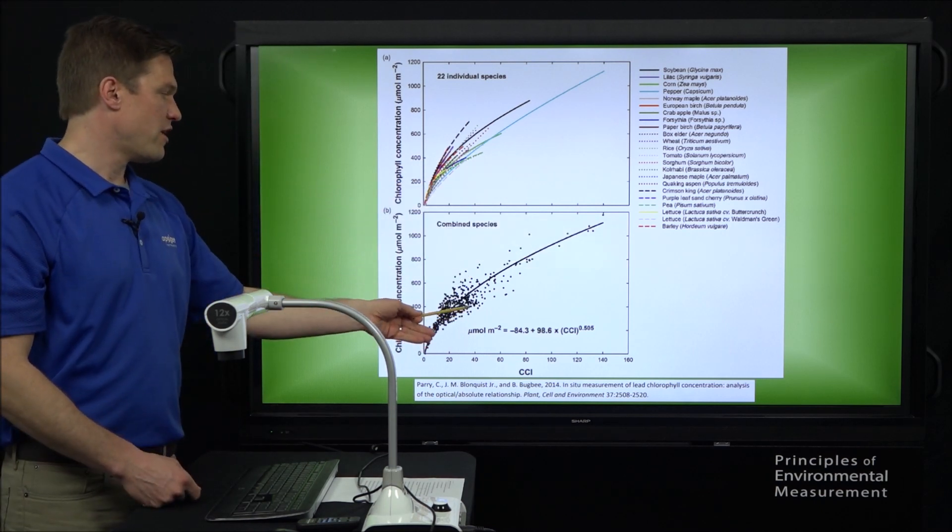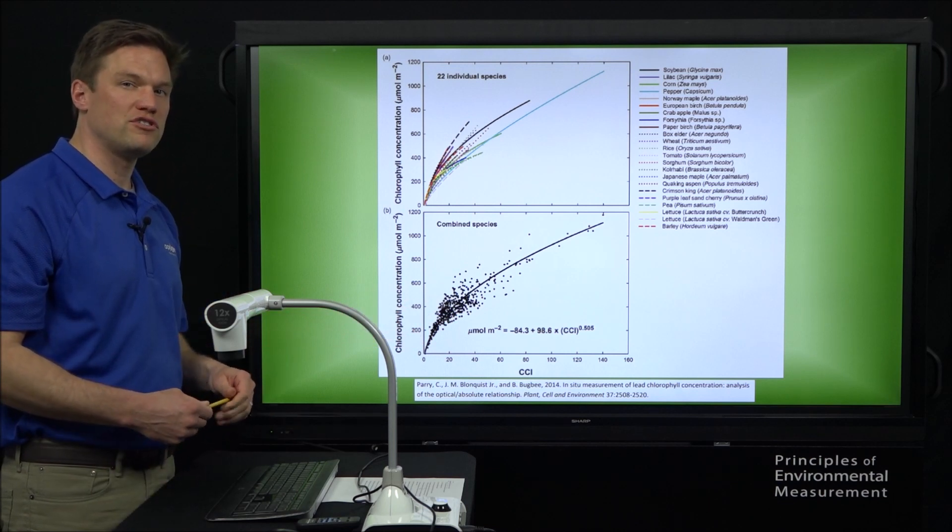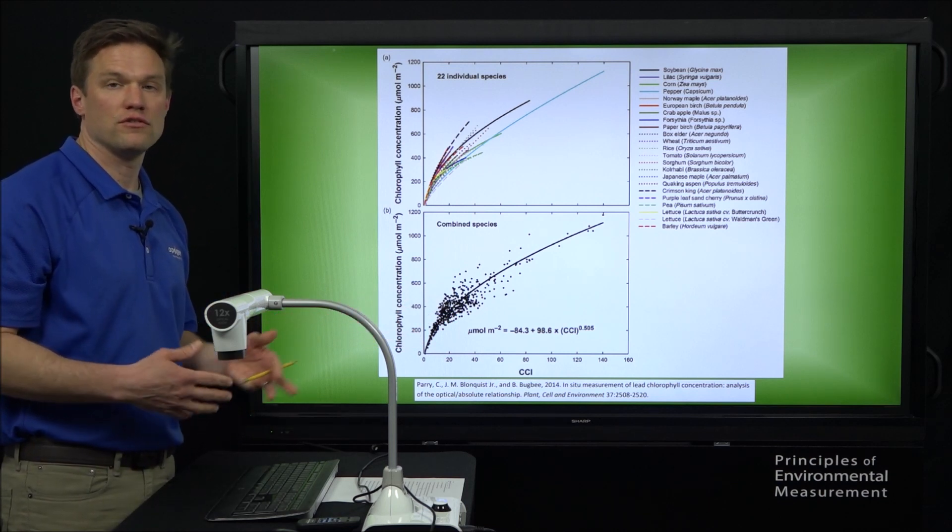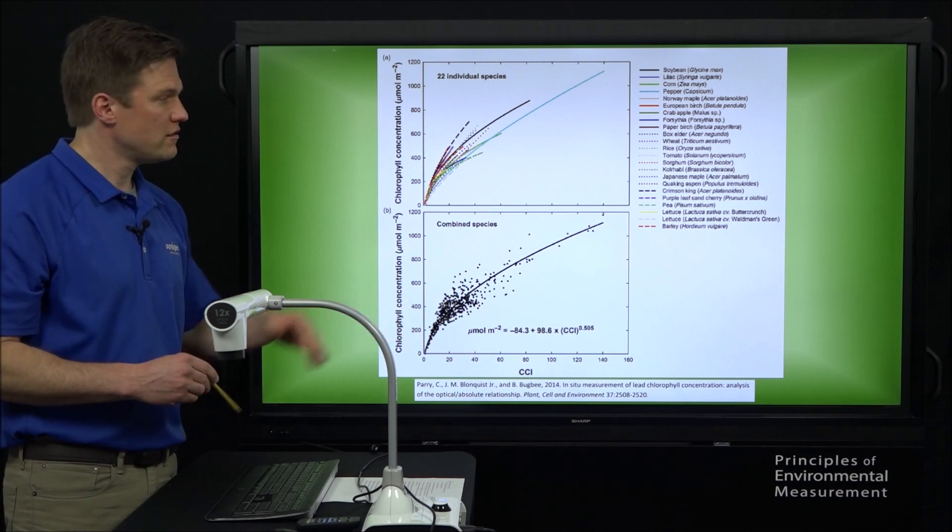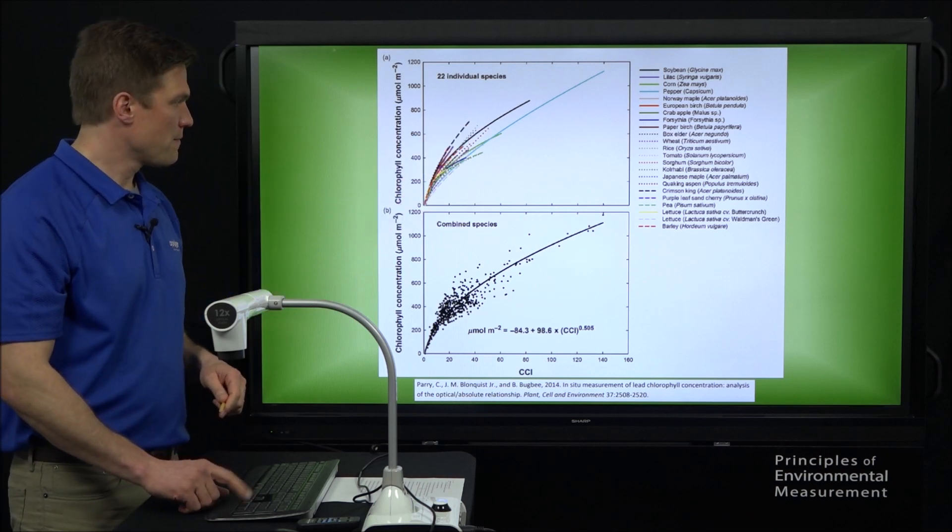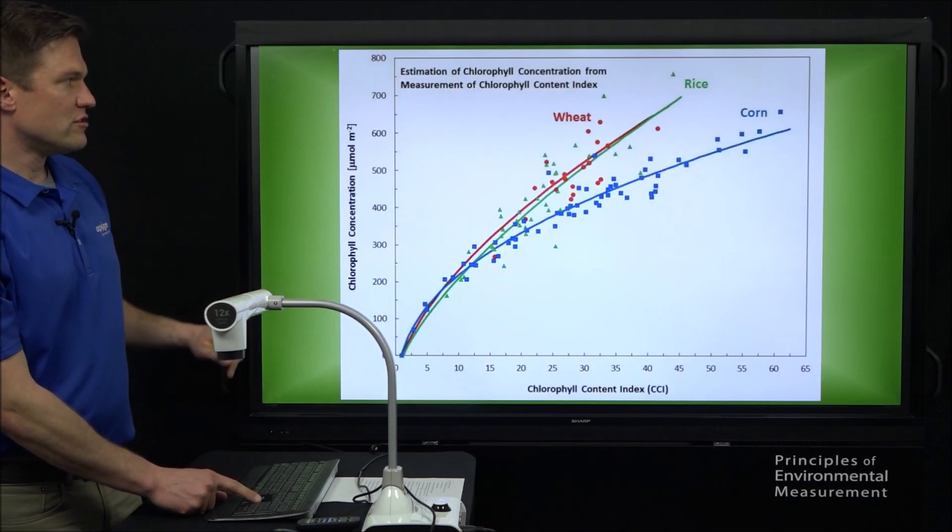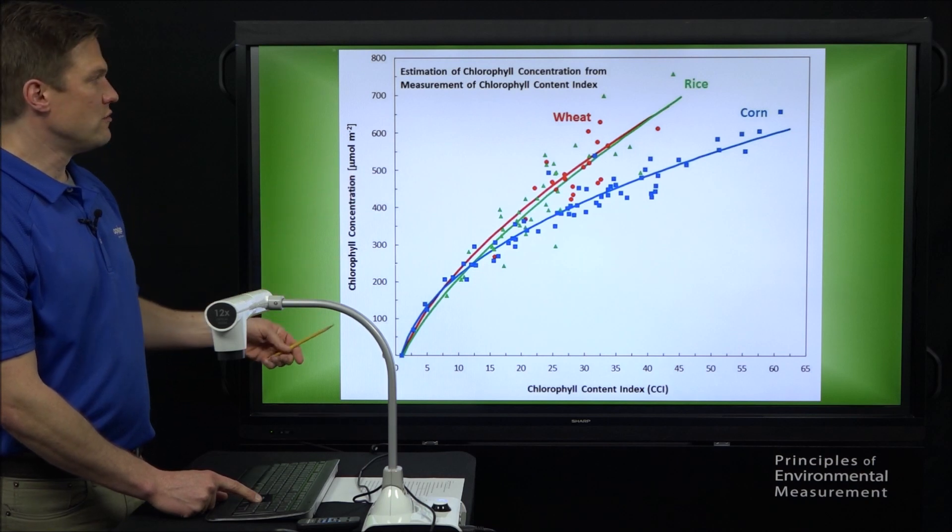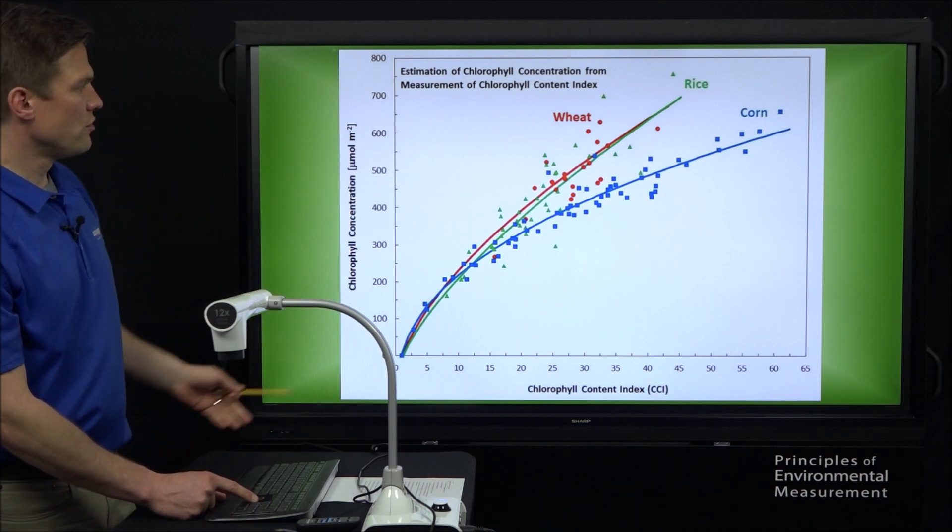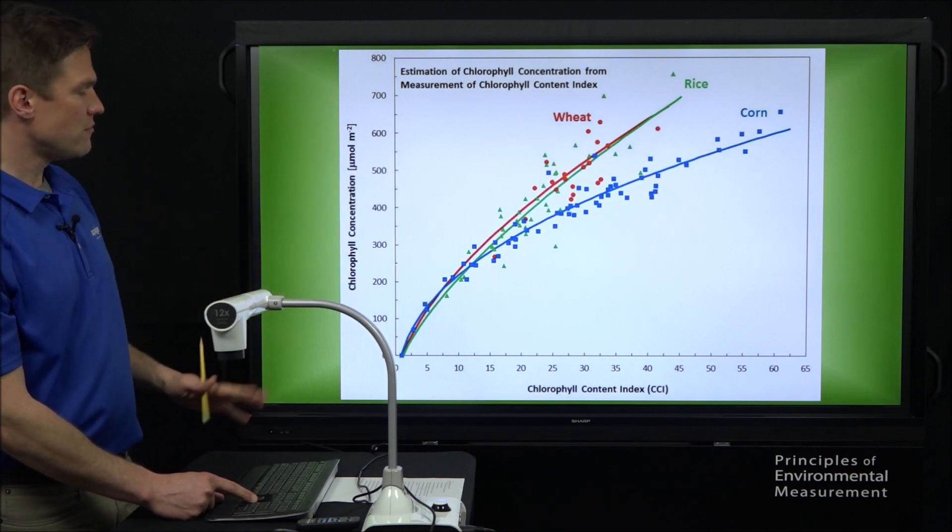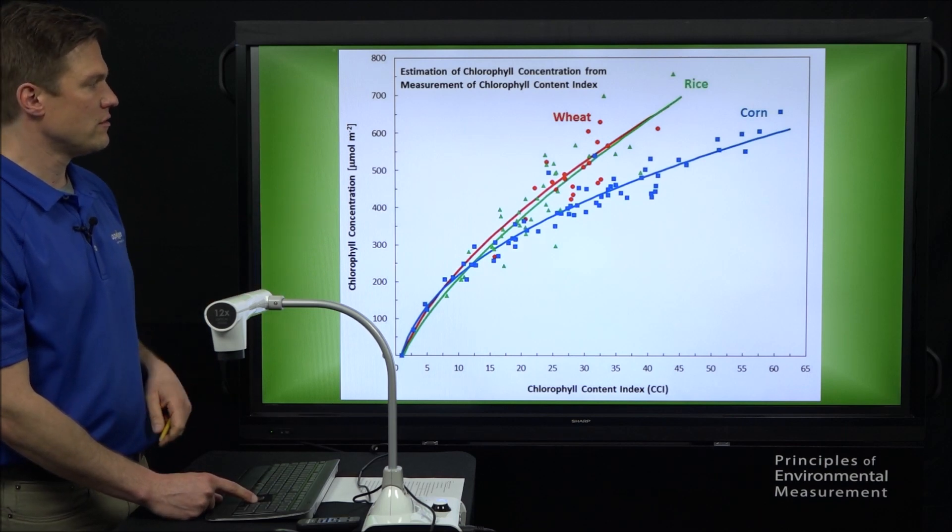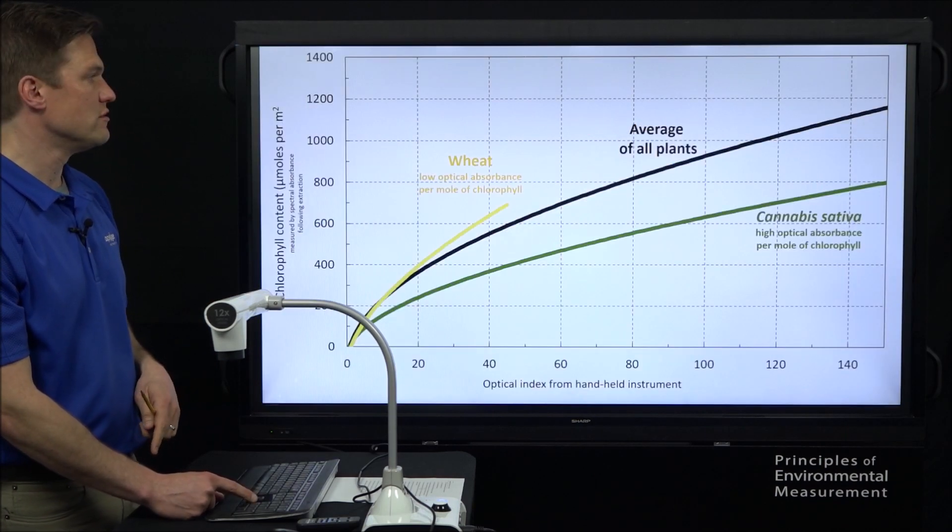And then on the bottom panel, we have the curve for the general set of coefficients that you could use if you're studying a plant that is not included in this list. Here's another look at those types of curves. This comes out of our owner's manual, and we just show wheat, rice, and corn. Again, they're similar but not precisely the same, so it's nice to have a curve particular to your species.